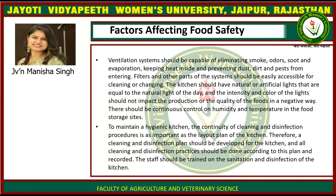The kitchen should have natural or artificial lighting equal to the natural light of day, and the intensity and color of the light should not negatively impact the quality of food production. There should be continuous control of humidity and temperature in food storage sites.